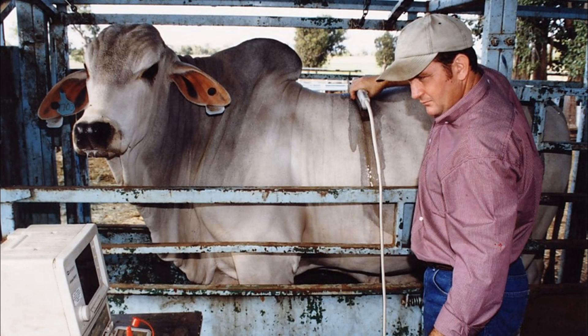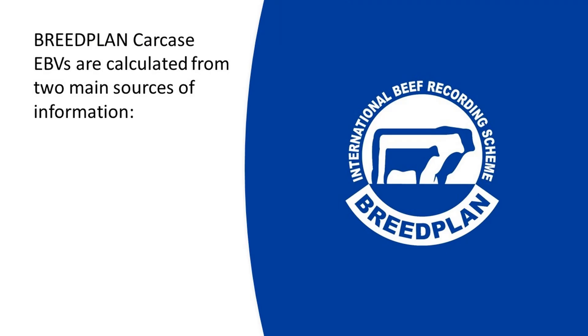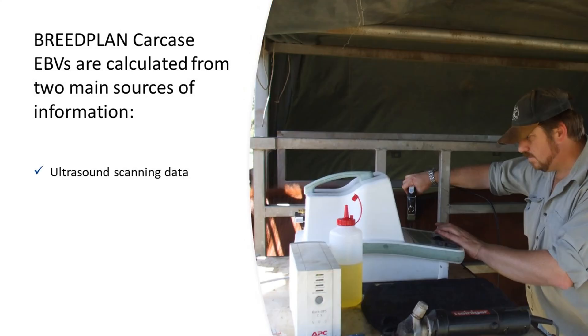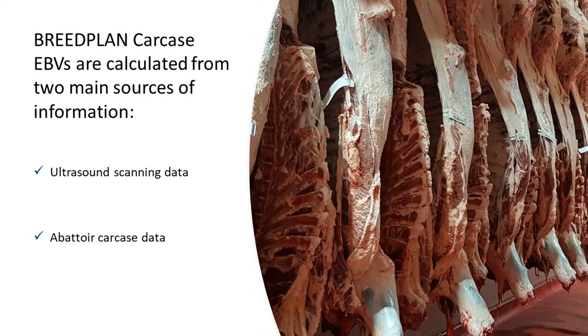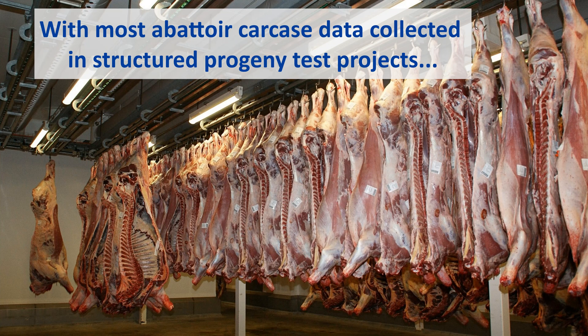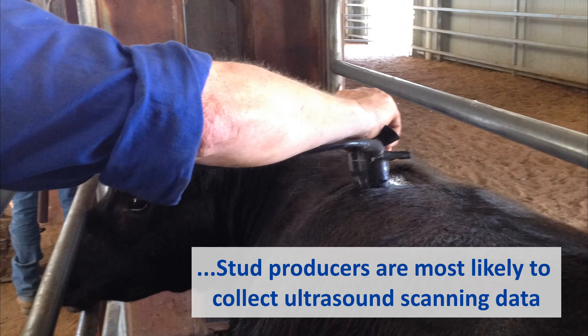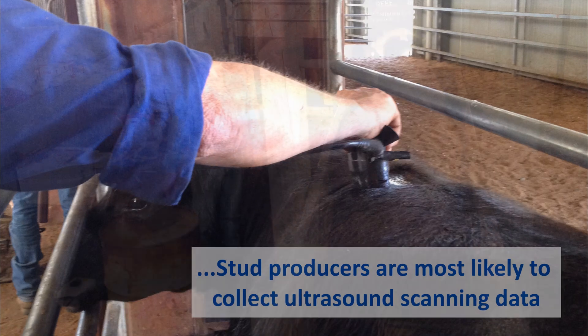In this video we will discuss the methods and considerations when collecting ultrasound scan data for Breedplan. The Breedplan carcass EBVs are calculated from two main sources of information: ultrasound scanning data and abattoir carcass data. With most abattoir carcass data collected in structured progeny test projects, stud producers are most likely to collect ultrasound scanning data.